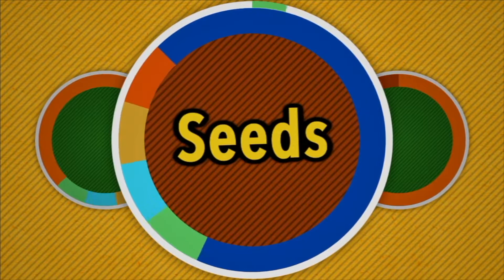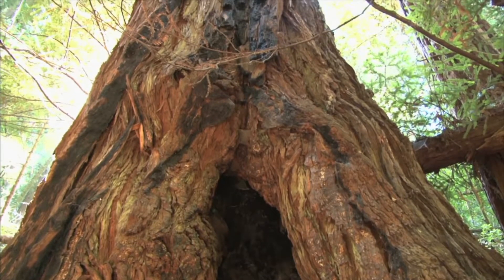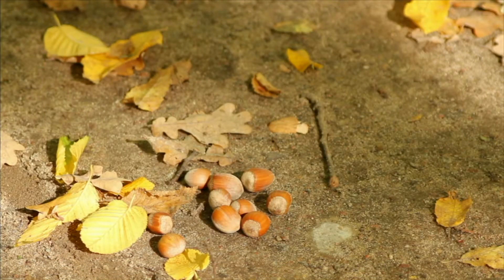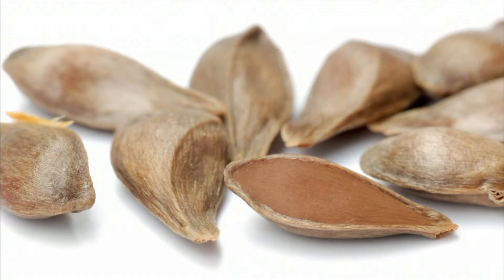Seeds come in all shapes, colors, and sizes. The size of a seed really has nothing to do with how big the plant will grow. For example, giant redwoods — the tallest plants on earth — come from a tiny seed only one-sixteenth of an inch long. No matter the size or shape, every seed has three parts. The first part is called the seed coat, which protects the other parts of the seed from injury, insects, and loss of water, giving the parts inside a chance to survive until conditions are right to start a new plant. Inside the seed coat is the second part called the embryo, which contains all the parts needed to become a new plant. The third part is its stored food, which is used by the embryo when it begins to grow.